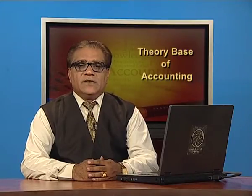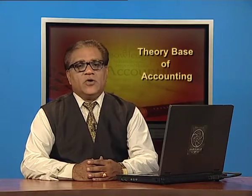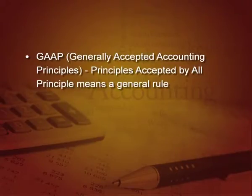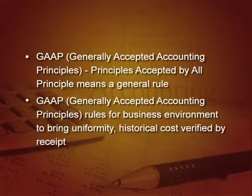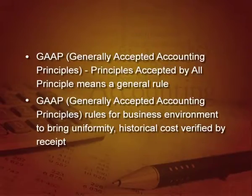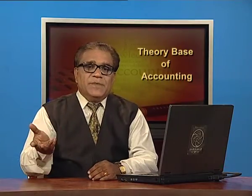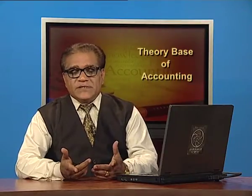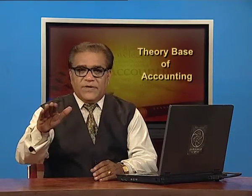As we know, there are Generally Accepted Accounting Principles, which are accepted by all accountants all over the world. A principle means a general rule accepted by everybody. GAAP — Generally Accepted Accounting Principles — rules for the business environment are made to bring uniformity in the accounts for everybody. Like historical cost is verified by the receipt which you take, so this brings objectivity in the accounts. This is acceptable by all, but if there is a market price, it can be different for different people and different markets, so that is not verifiable. GAAP tells us the rules which are acceptable by everybody.